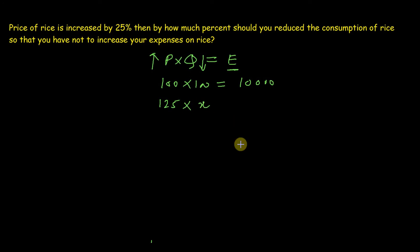New quantity we need to find, so assume the new quantity is x and we need our expenditure to be constant, so put it same as 10,000. After solving this equation, we get 80, so that means reduction is 100 minus 80 equal to 20%.